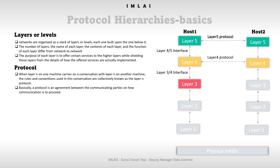In addition to minimizing the amount of information passed between layers, clear-cut interfaces also make it simpler to replace one layer with a completely different protocol or implementation — for example, replacing all telephone lines with satellite channels — because all that is required is that the new protocol offers exactly the same set of services to its upper neighbor. It is common that different hosts use different implementations of the same protocol, often written by different companies.